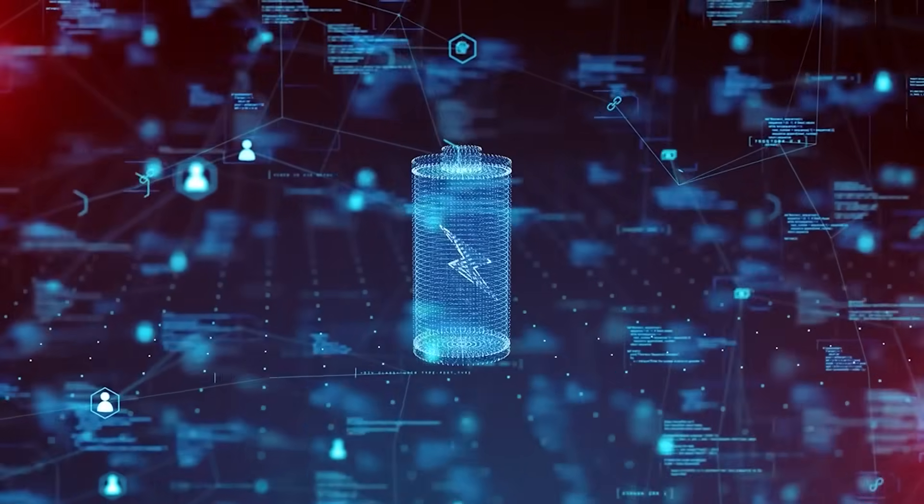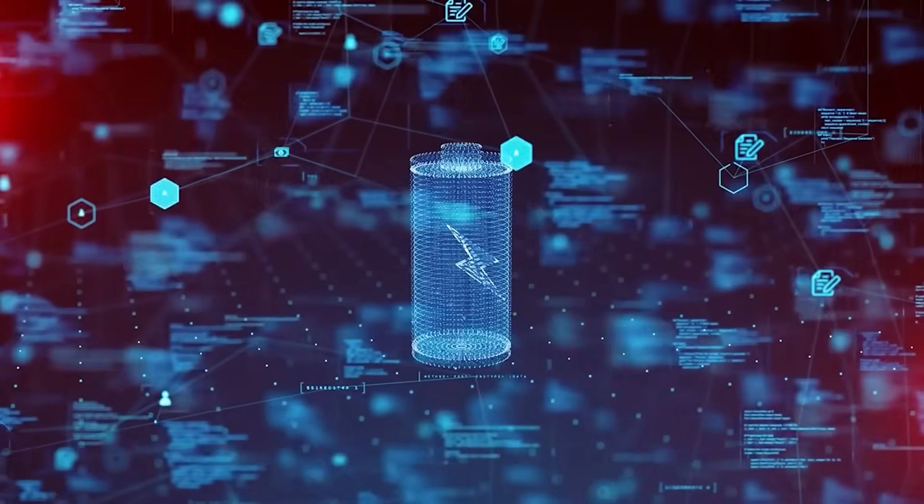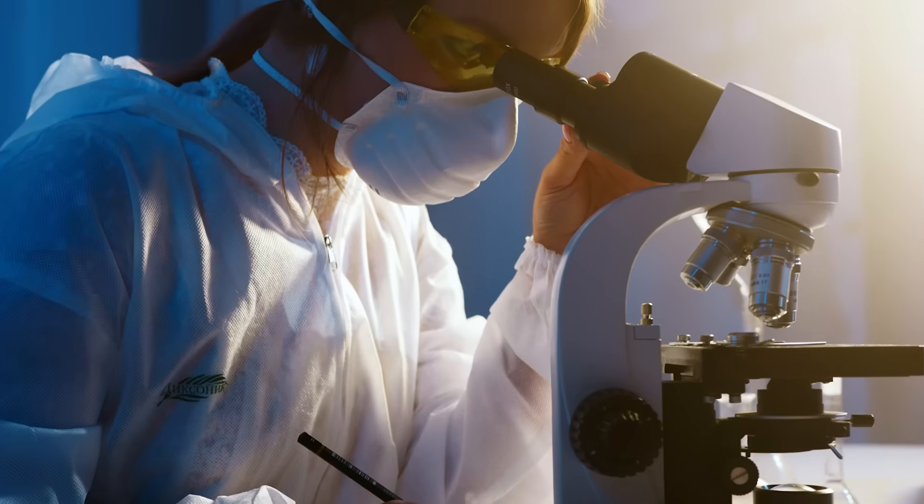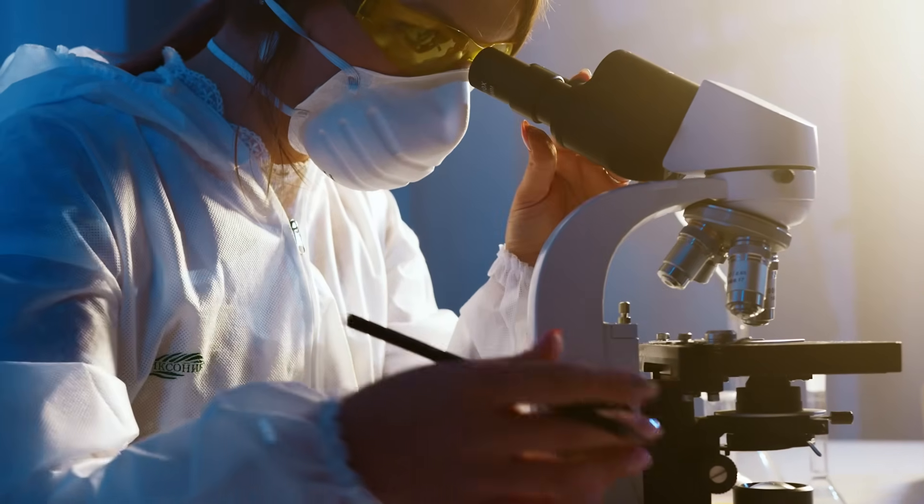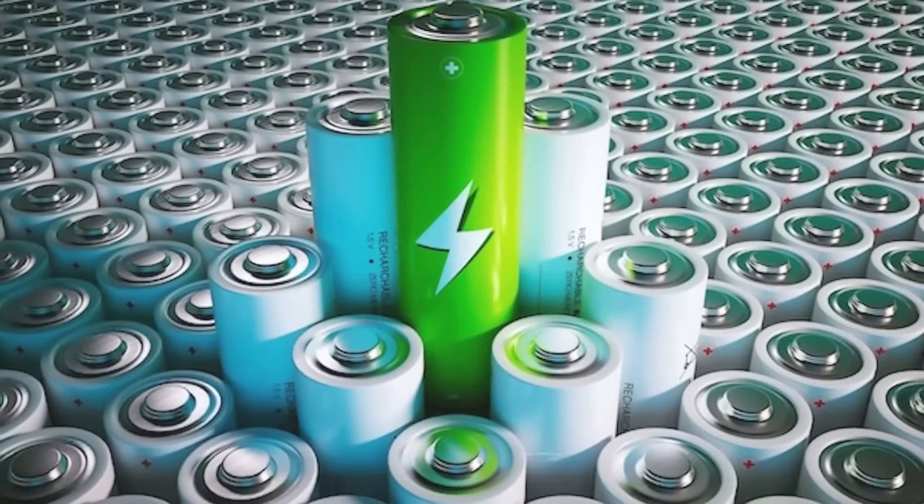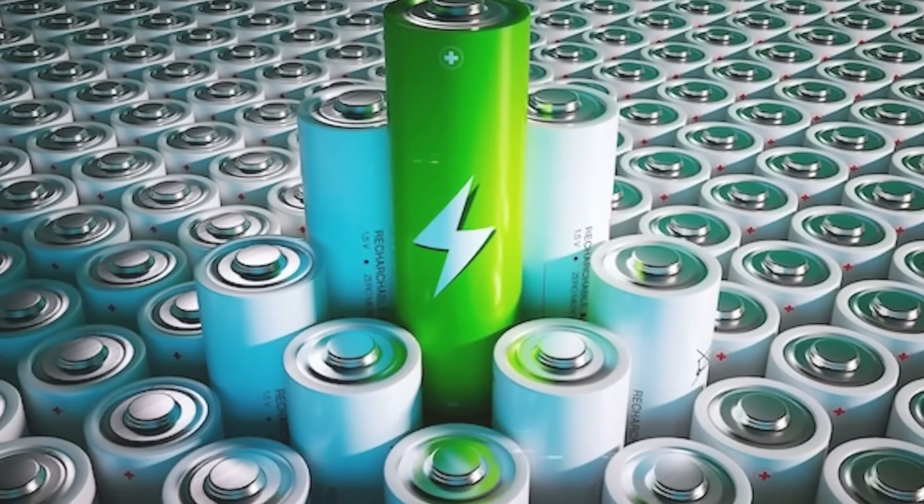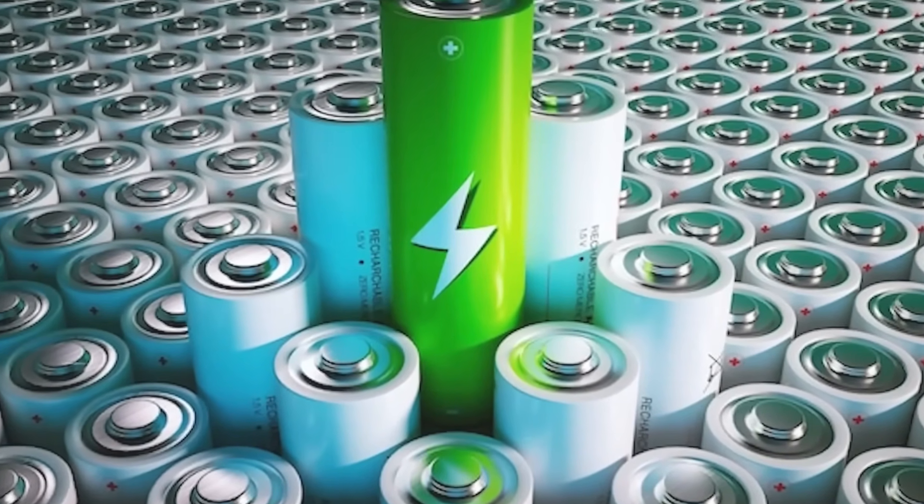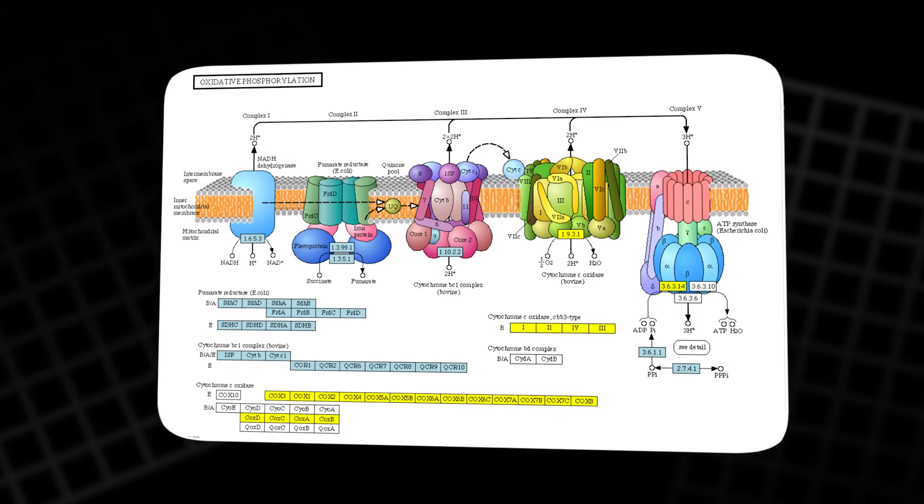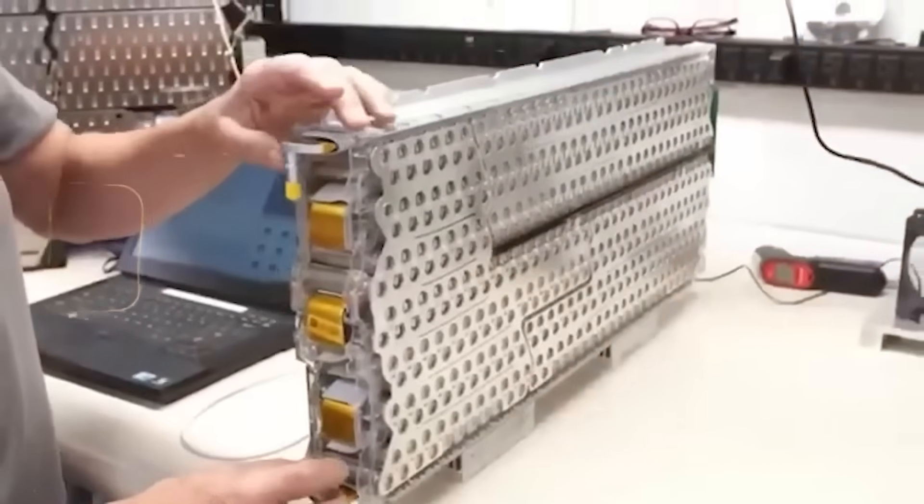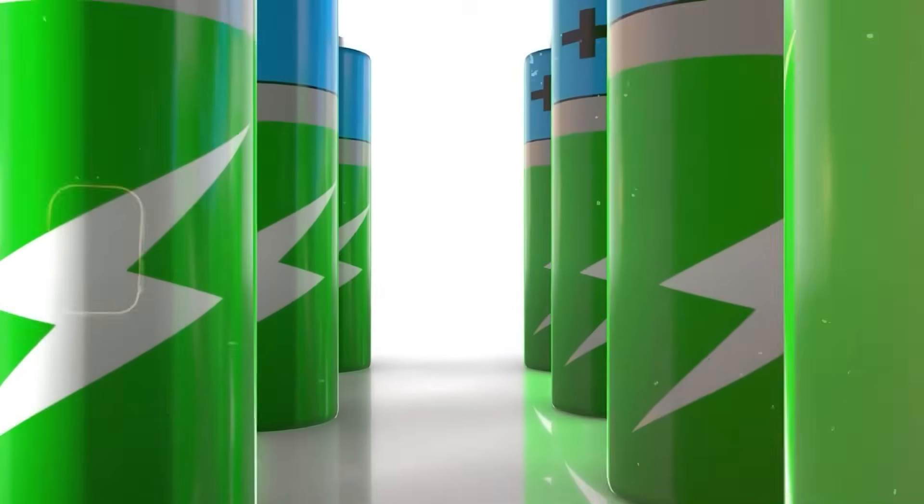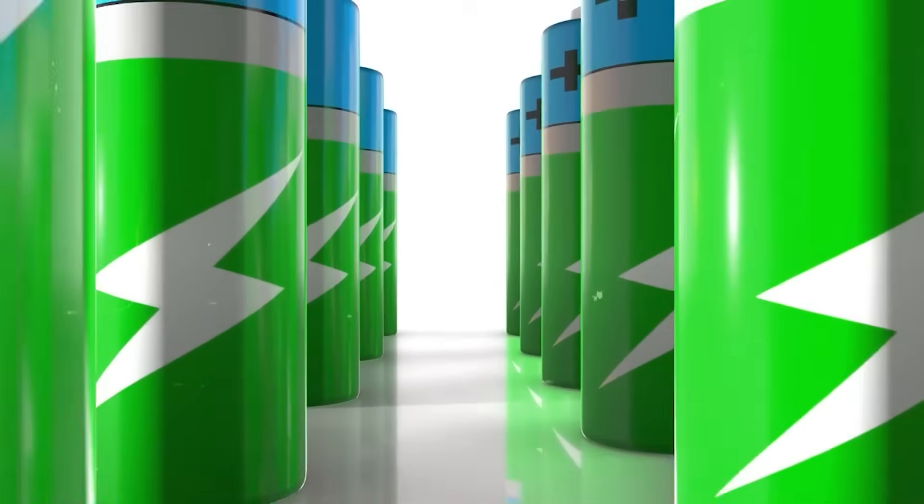Even after tens of thousands of full charge-discharge cycles, the voltage and capacity remain remarkably consistent. Using advanced simulations and ex situ analyses, the researchers discovered that the battery's reaction mechanism involves a reversible co-insertion of zinc and hydrogen ions, enabling a five-electron transfer process during each cycle. This mechanism gives the material its high redox activity and exceptional stability, something almost unheard of in previous organic battery systems.